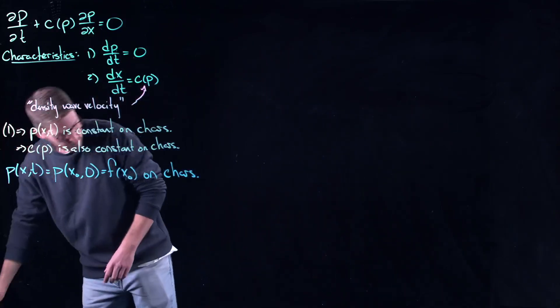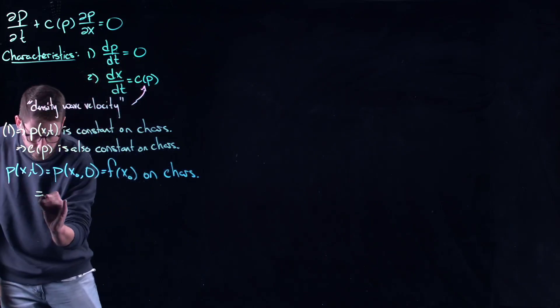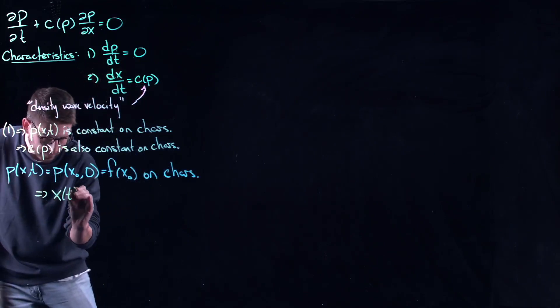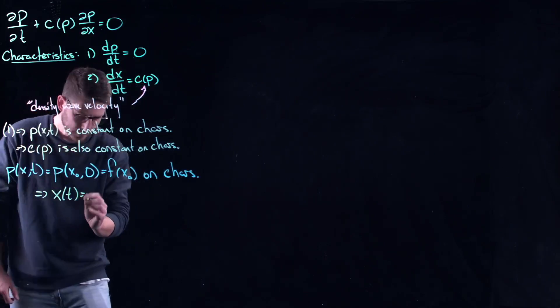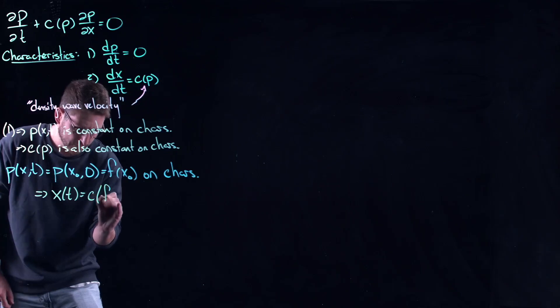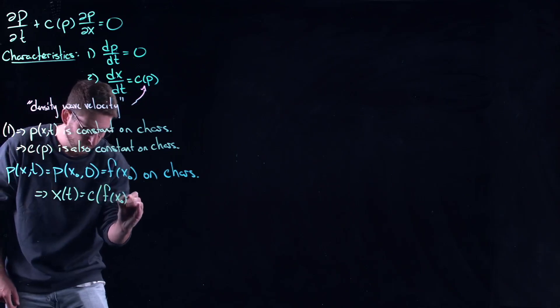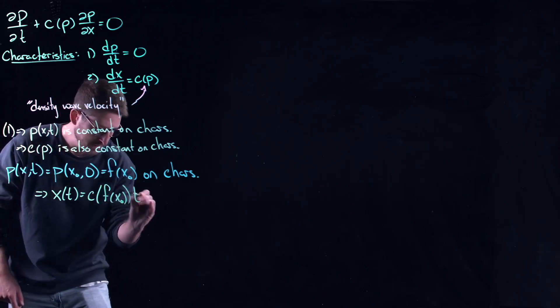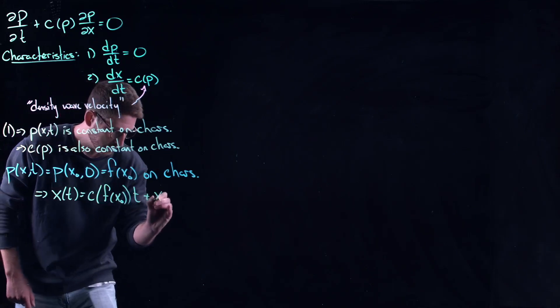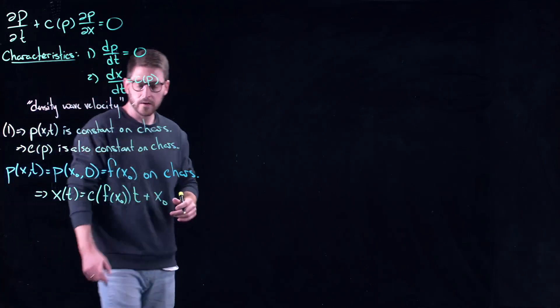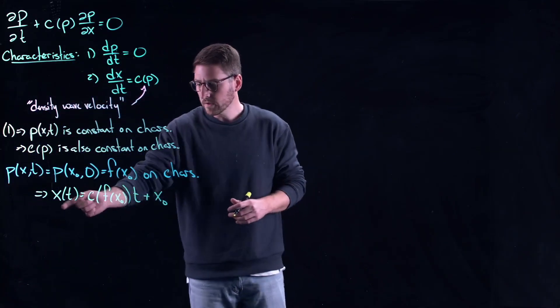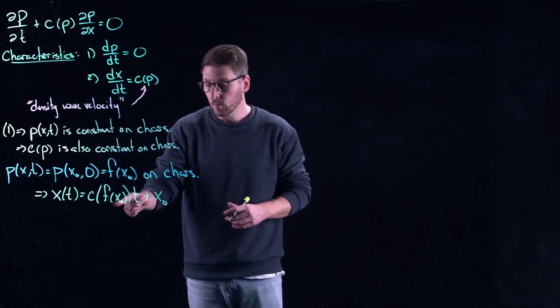Now what this tells me is that the characteristics are given by x(t) = c(ρ(x₀,0))t + x₀. So the speed along your characteristics is determined by where you started.